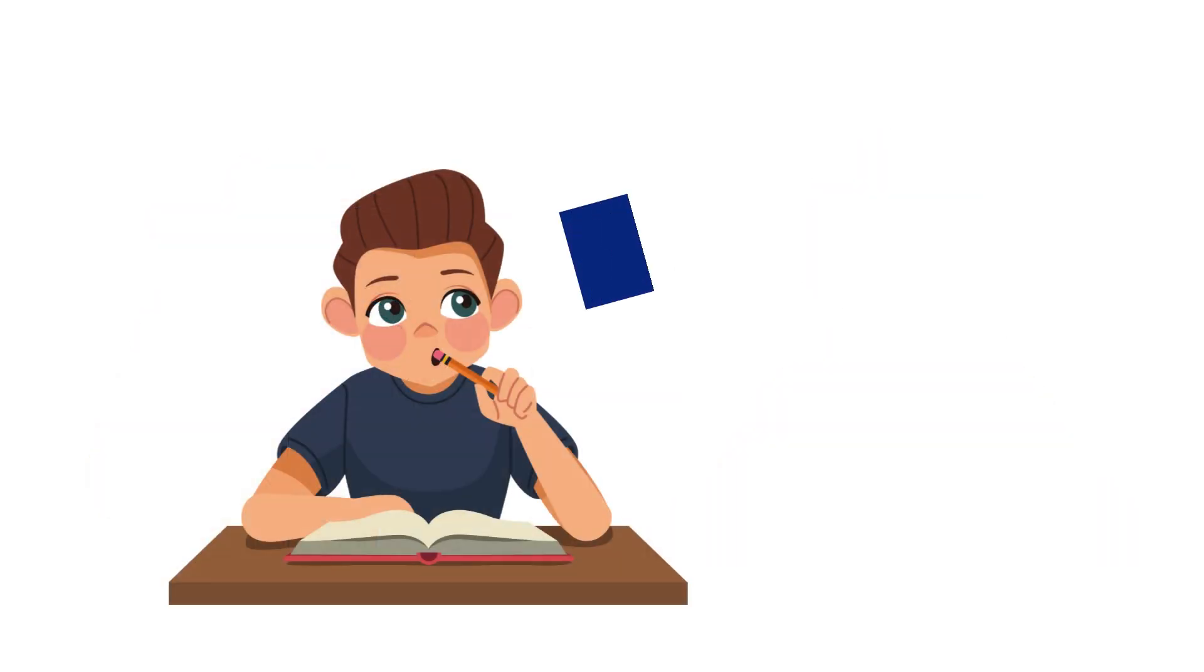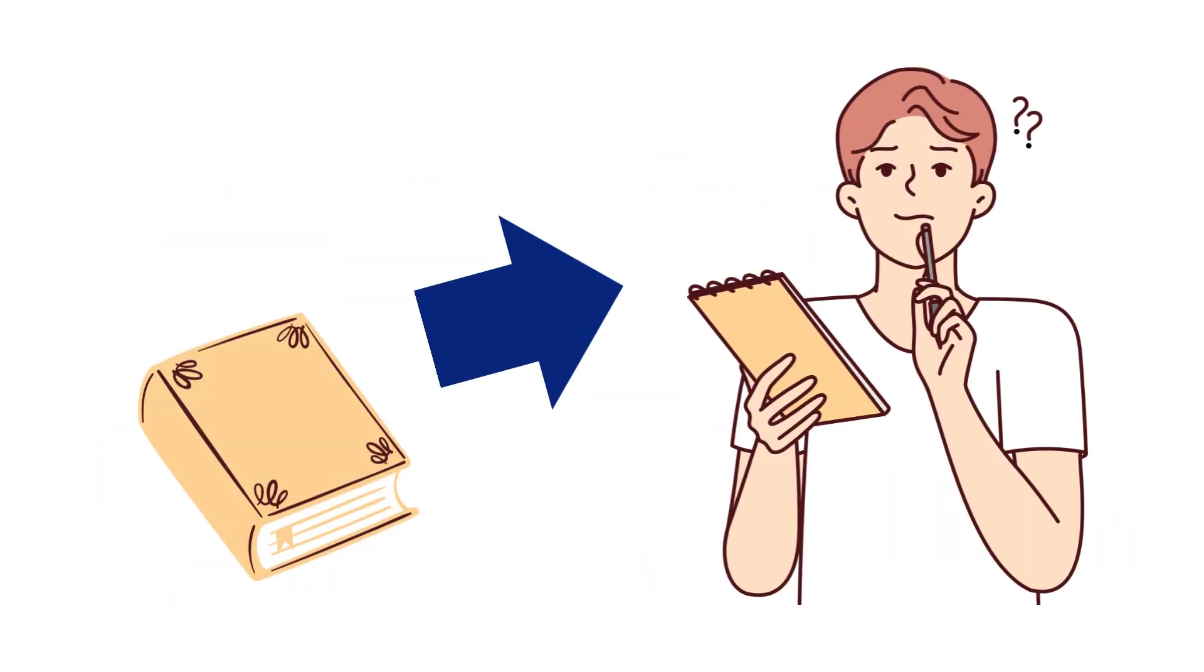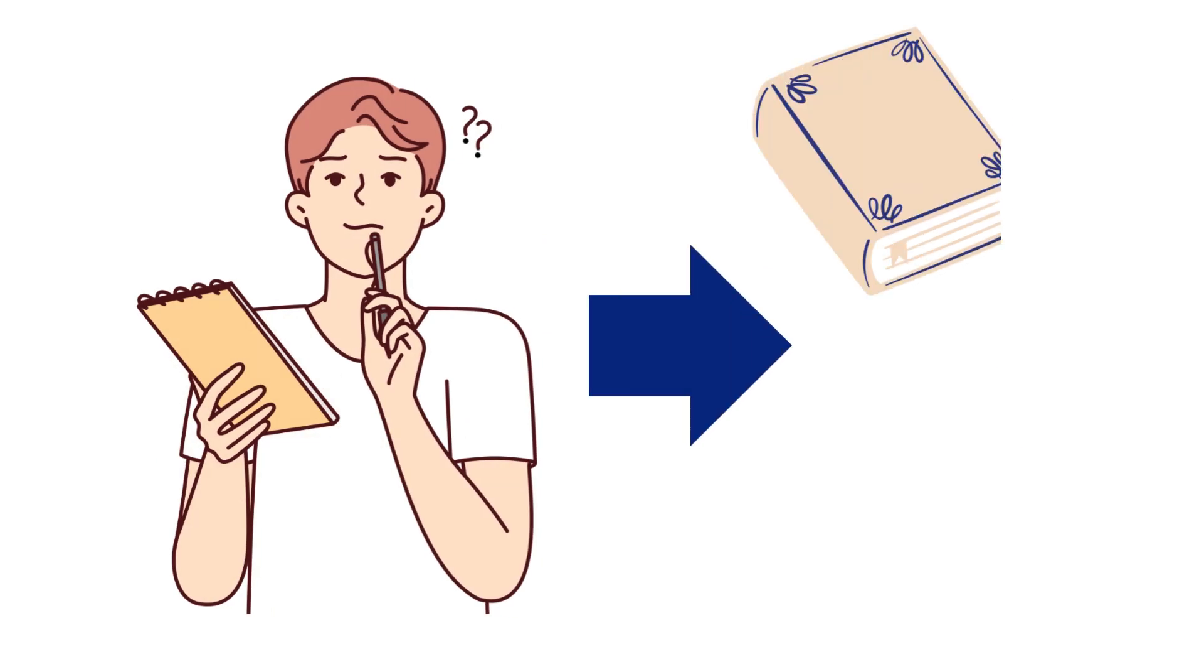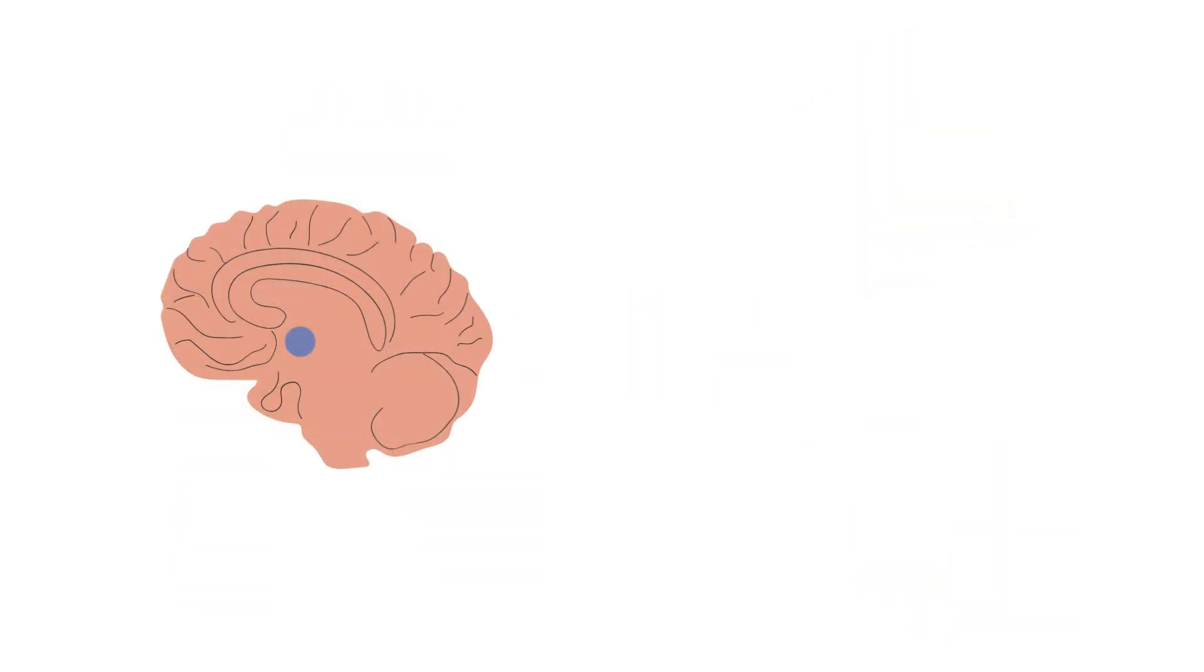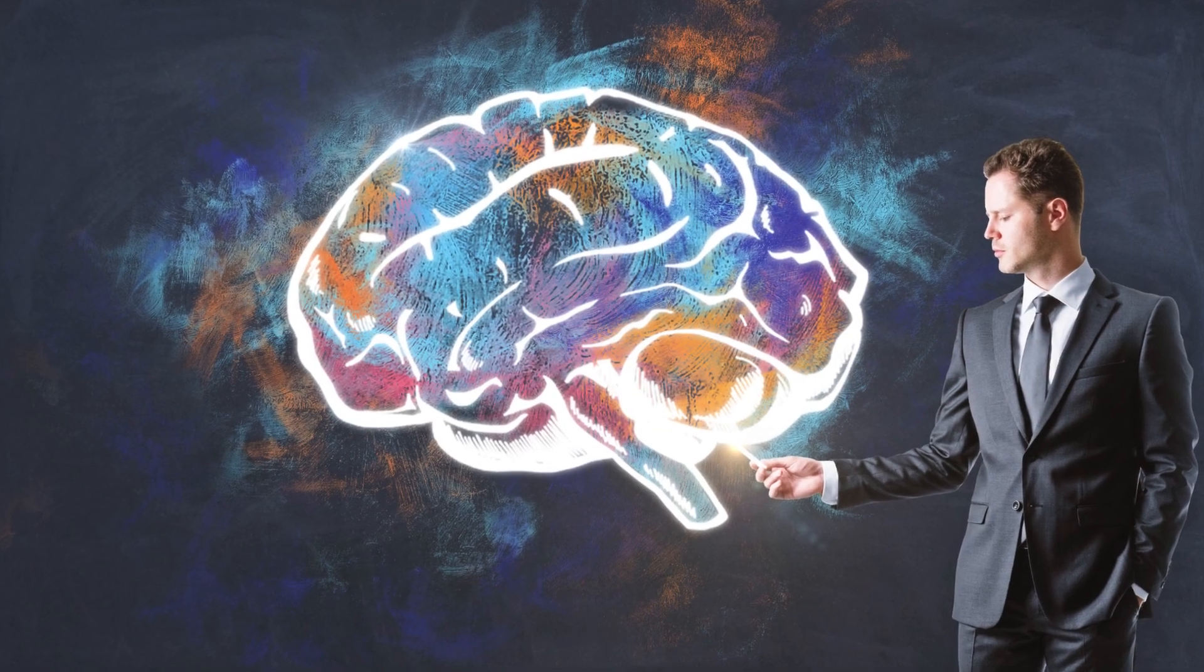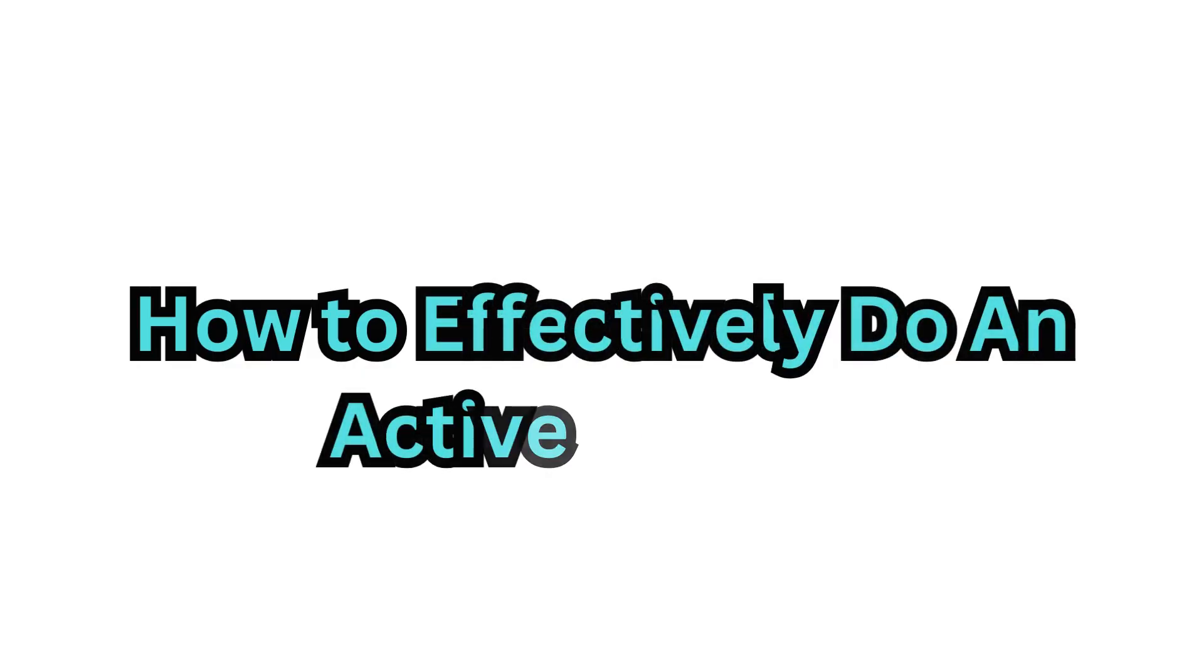So how can Cabu better stimulate his hippocampus? He should close his book and try to recall what he's learned. By doing this, he isn't relying on the book, but on his hippocampus. This practice stimulates the hippocampus and strengthens his memory. Each time he does this, his memory becomes even stronger.